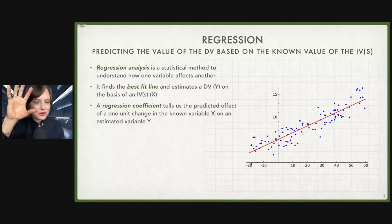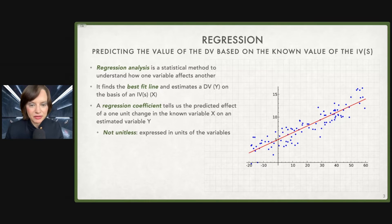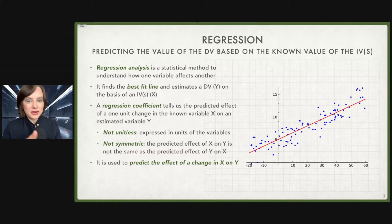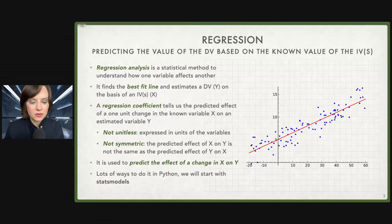I recommend get through this, watch the example, and if you're like wait a minute what is the coefficient, hop back to this earlier part of the video. Regression coefficients are not unitless, they are expressed in the units of the variables. They are not symmetric. The predicted effect of X on Y is not the same as the predicted effect of Y on X. If you saw my last video on correlation, this is different.